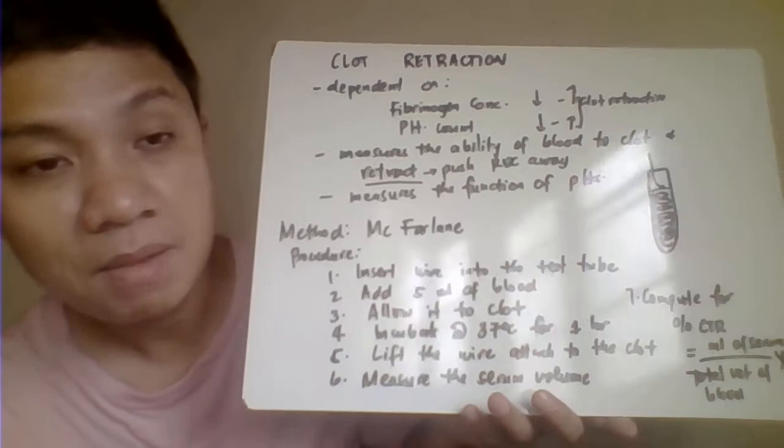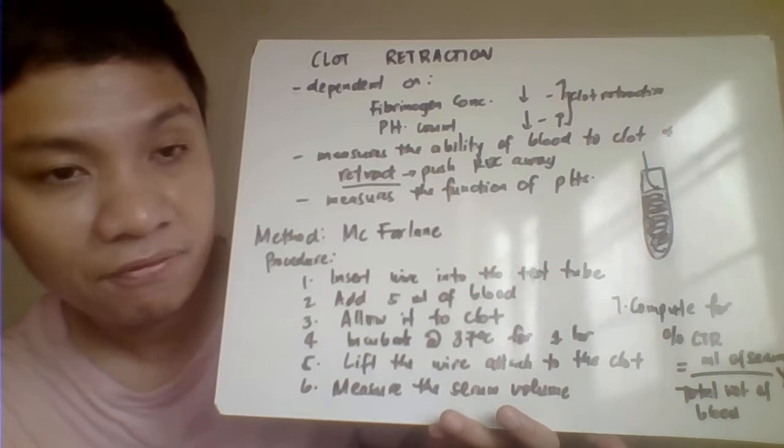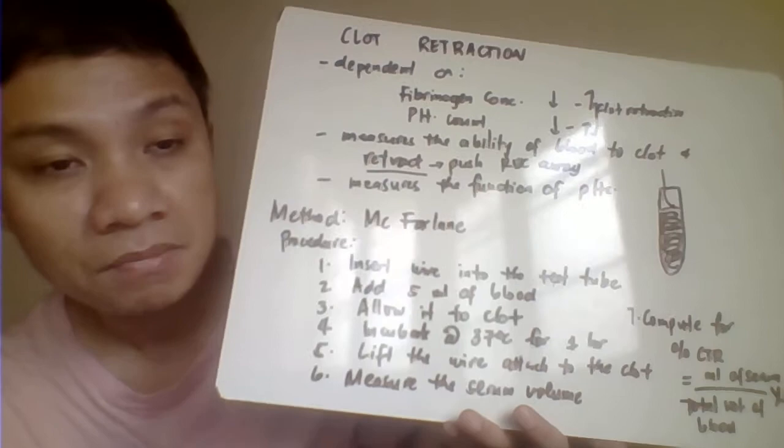If the clot is soft, when you lift it many RBCs will remain, and that correlates with poor quality of clot retraction.